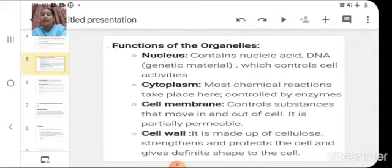Functions of organelles as you have already studied in your chapter number 5 cells. Nucleus contains nucleic acid, DNA genetic material which controls cell activities. Then cytoplasm, most chemical reactions takes place here and controlled by enzymes. Then cell membrane controls substances that move in and out of the cell. It is partially permeable. Then cell wall which is only present in plant cells. It is made up of cellulose and it strengthens and protects the cell and gives a definite shape to the plant cell.